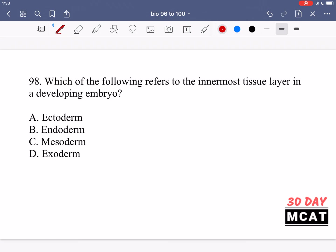In question 98, which of the following refers to the innermost tissue layer in a developing embryo? So you just need to know the order of these. The way I like to think of it is endo kind of sounds like under which is saying that it's under the other layers so it's the one that's all the way on the inside. You can also think of it as end. It's at the end. If you're thinking about from the outside and you're looking in, it's the one you see at the end.